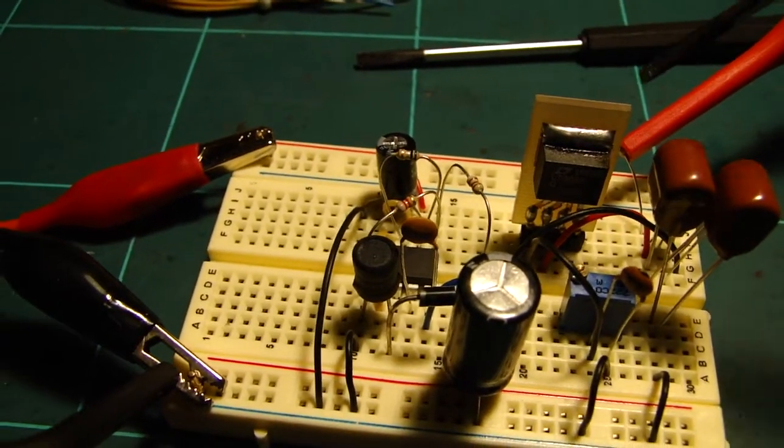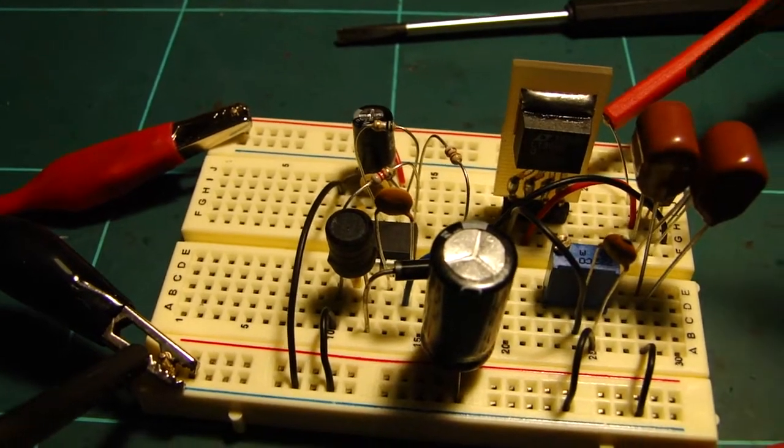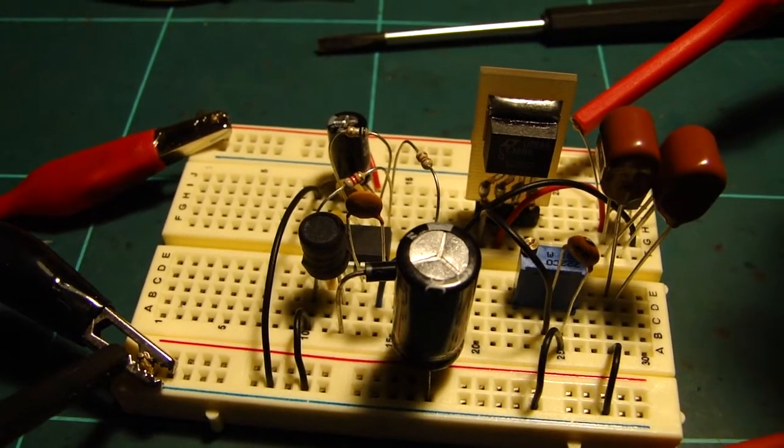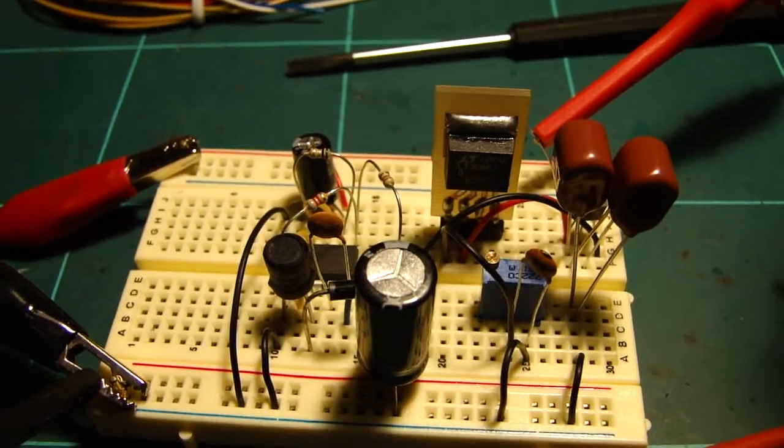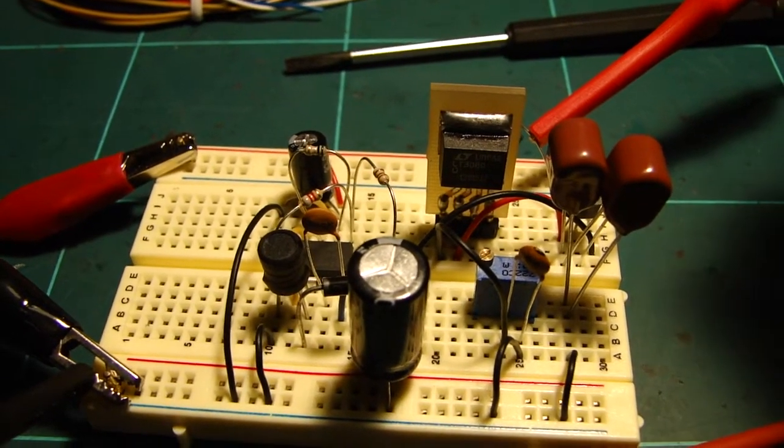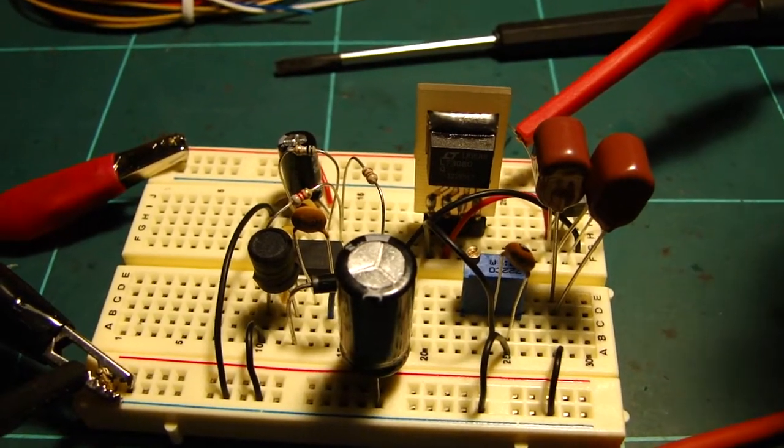The LM334 is between the negative rail and the output of the LT3080. So what that means is there's a constant 1mA current on the LT3080 which will allow it to go all the way down to 0V.